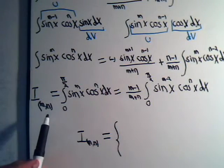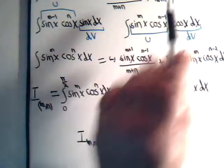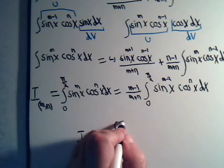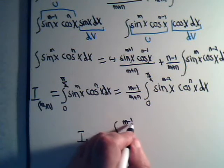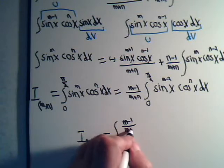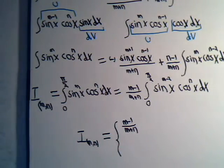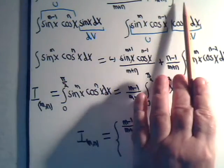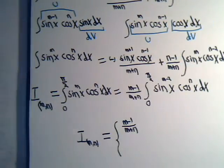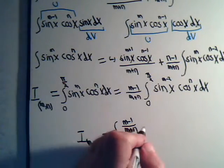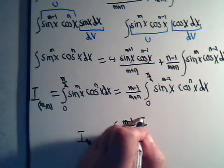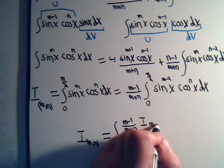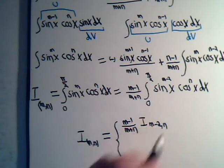So, there's I_mn, and we're going to have a reduction formula from here. That is m minus 1 over m plus n. And then this integral right here goes from 0 to pi over 2. So, we abbreviate that as I_(m-2,n).